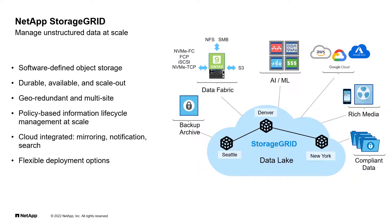In addition to being a FabricPool target, you can also leverage StorageGRID for other object-based workloads. Having an on-premises S3 or Swift protocol target gives you the ability to service multiple workloads via a dedicated data lake. For example, many backup applications have native S3 integration. AI and ML applications can be positioned both upstream and downstream from the object store.